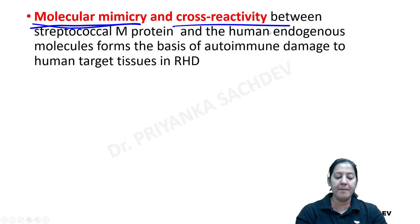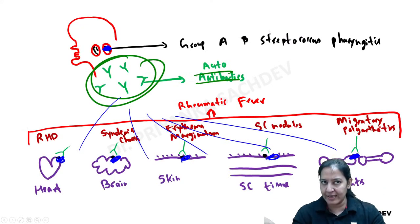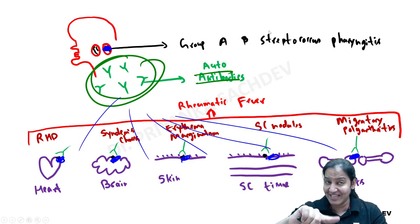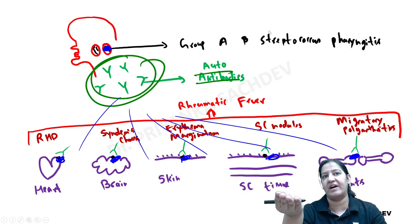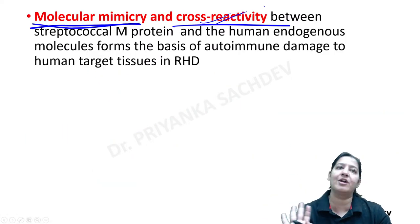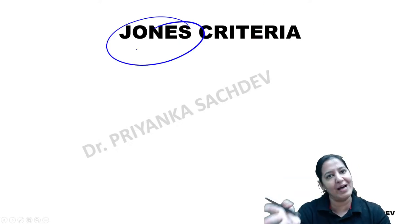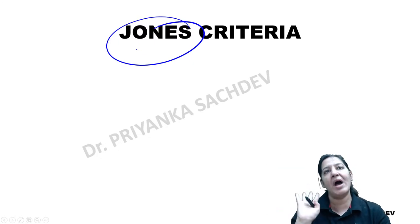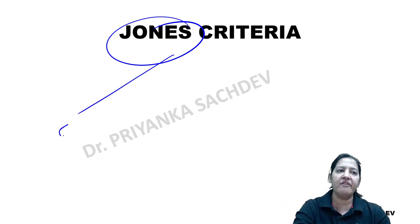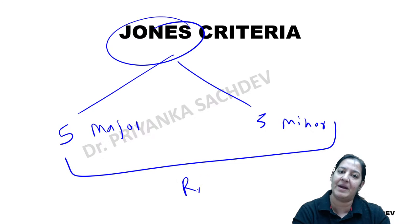Molecular mimicry means the five organs' epitopes mimic the bacterial epitope. The antibodies do the cross-reactivity. Jones criteria — described by the scientist Jones — provides major and minor criteria to diagnose a patient as having rheumatic fever. There are five Jones major criteria and five Jones minor criteria.